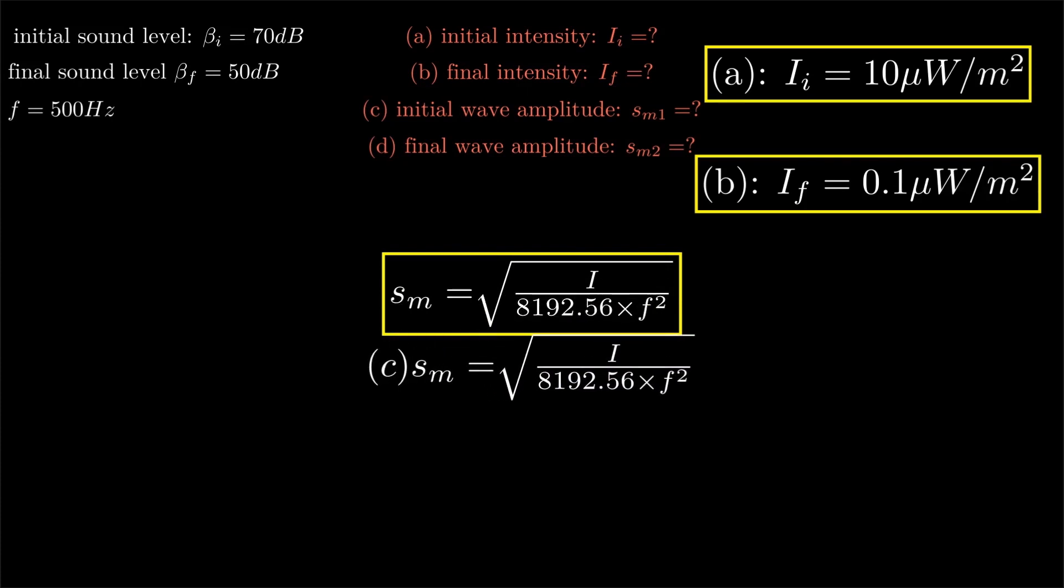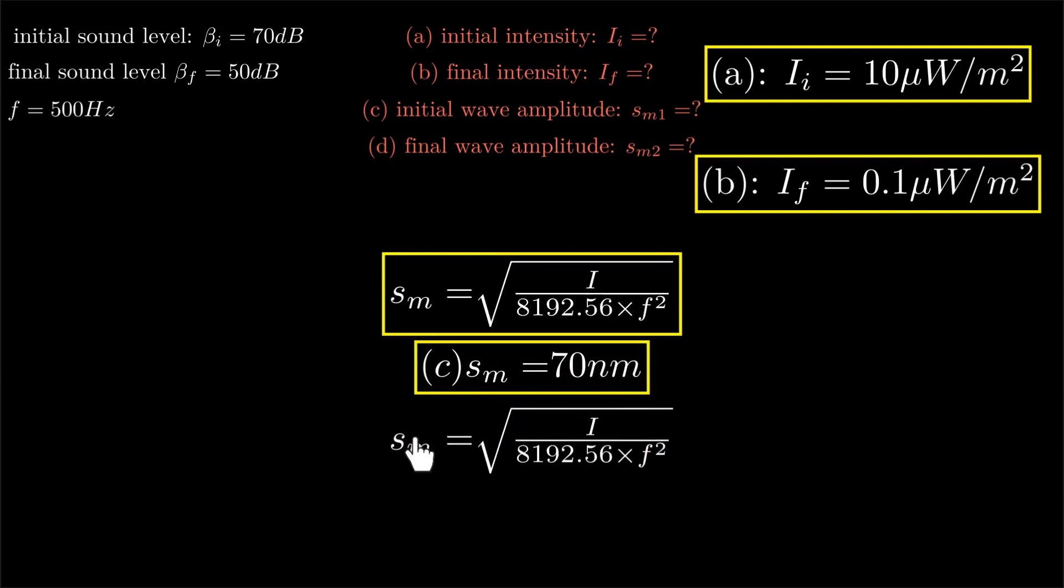For part (c), calculating sm using the initial intensity and frequency of 500 Hertz, we get 70 nanometers. Similarly for part (d), using the final intensity and the same frequency, we get 7 nanometers. These are the answers for parts c and d.